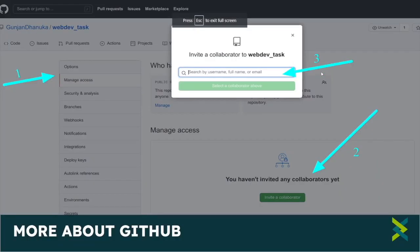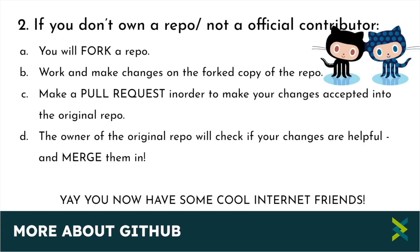If you don't own the repository, you fork it — that creates a copy on your own GitHub account. Clone it to your computer, make changes, push to your GitHub account, and then create a pull request. The original owner will review your changes and if they are correct and helpful, merge them. Once your changes are merged, your branch will be even with the source branch. This is the process followed in most open source events.